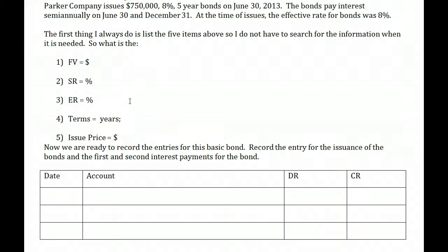The last thing we need to know is the issue price — the amount of cash the company will receive when they issue the bonds. The issue price will equal the face value if the effective rate and the stated rate are the same. If they are not the same, the issue price will not equal the face value, and we will look at that in a later lecture. This video covers just the basic bond issued at face value.